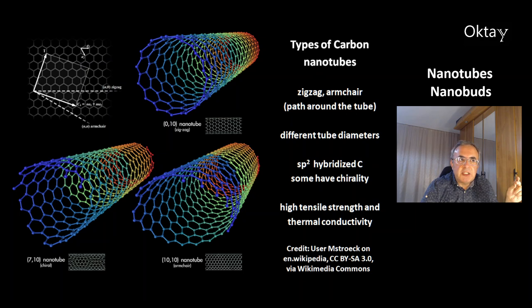These are the types of carbon nanotubes. There are two main types, the zigzag and the armchair. This describes the path around the tube. You can change the tube diameters. Like graphene and graphite, nanotubes are also sp2 hybridized with a high pi electron system.